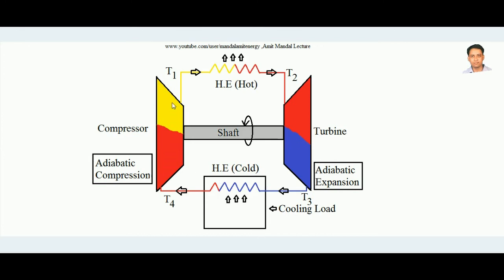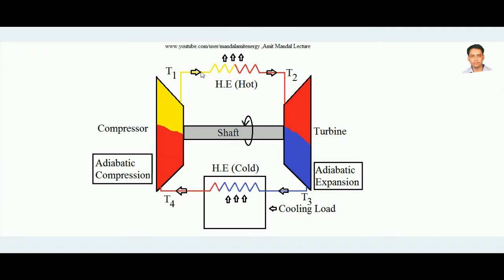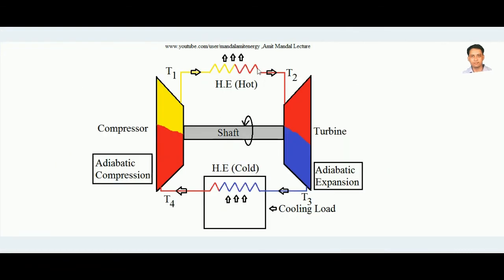The air is compressed in the compressor and comes out at a high temperature T1 — adiabatic compression causes temperature to rise. This compressed air is then passed through the hot heat exchanger, which is open to the surrounding, so heat escapes from the air to the surroundings and the air's temperature falls. So air is compressed, exits at high temperature, then passes through the hot heat exchanger and loses heat to the surroundings.